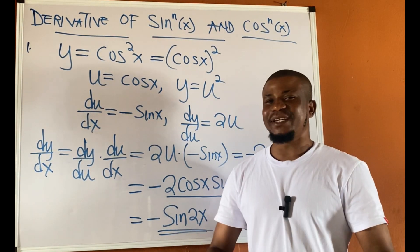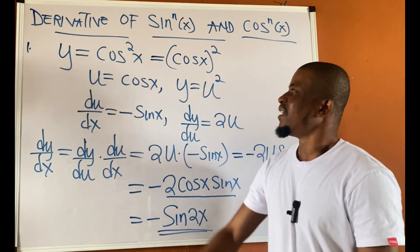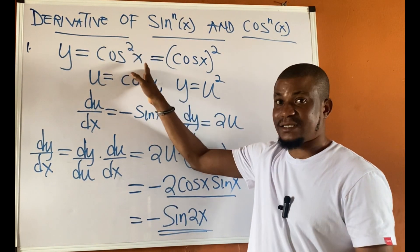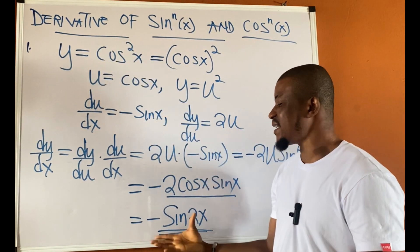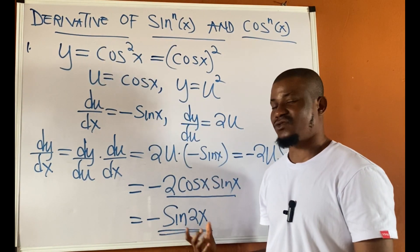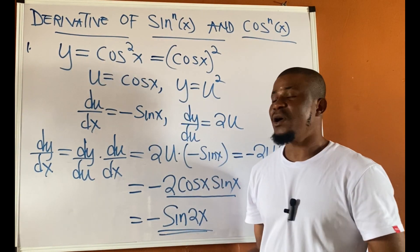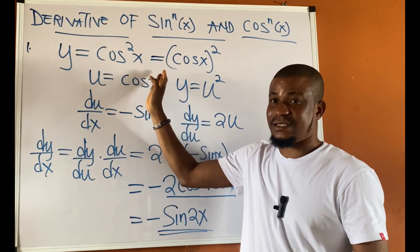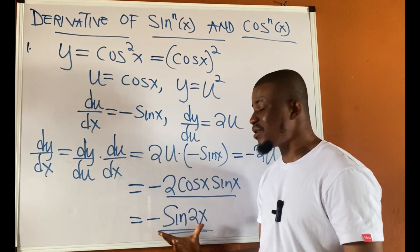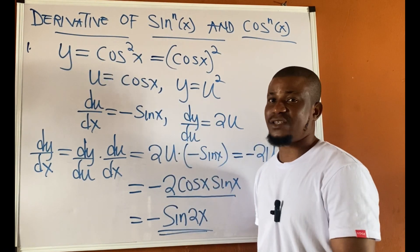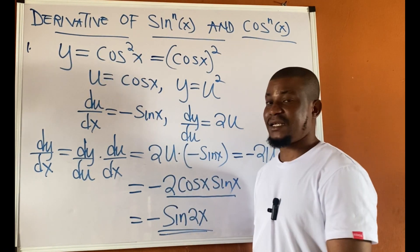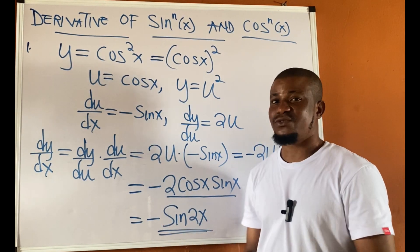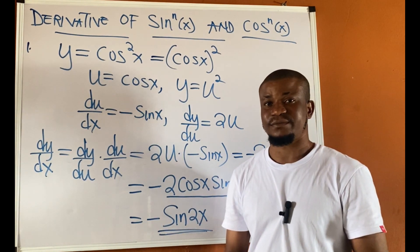So the simple trick is this: if it is cos squared x, the derivative is negative sin 2x. But if it is sine squared x, the derivative is positive sin 2x — that is, dy/dx is a positive sin 2x.